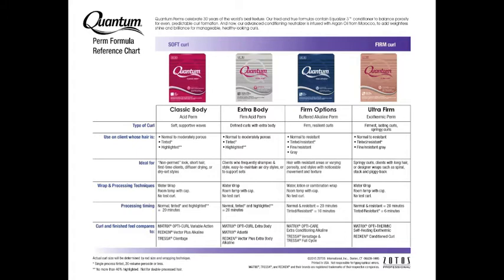Notice the perms are listed across the top of the page. Directly below each perm is listed the chemistry — is it an acid, alkaline, or exothermic?